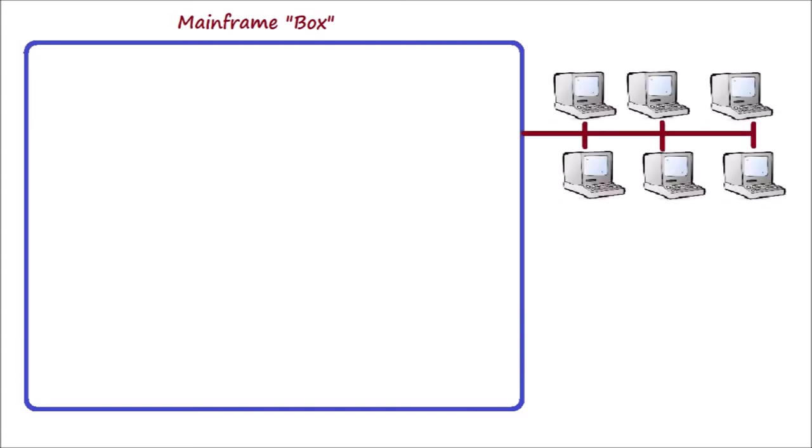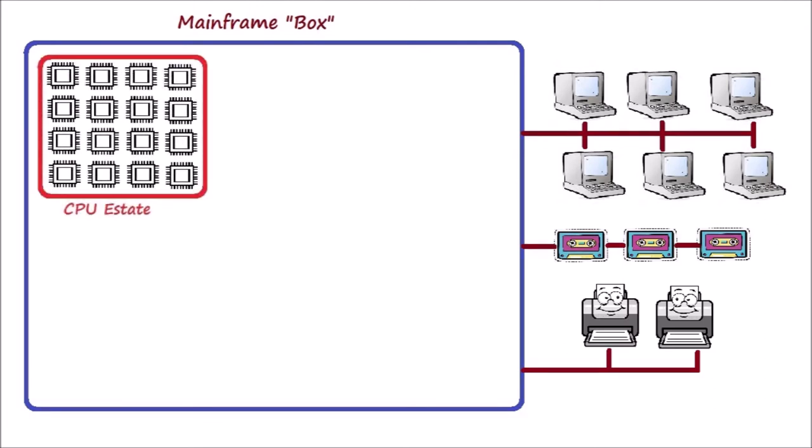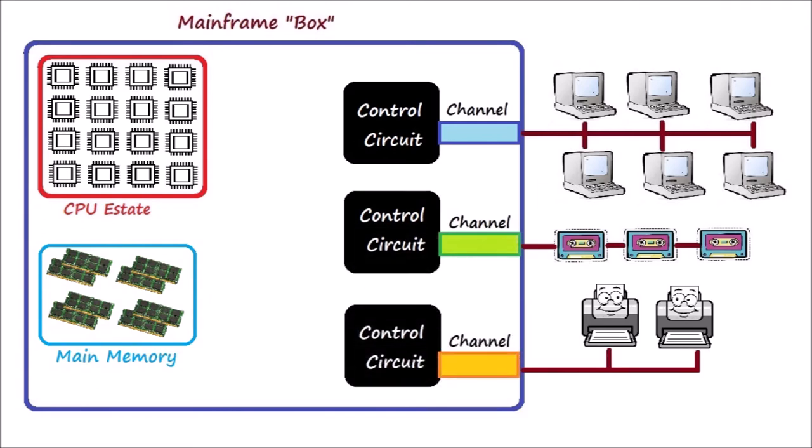If we are to draw a logical picture, here's a big box that represents the mainframe, and we have a pool of terminals connected to it, also a pool of tapes and pool of printers. Within the mainframe box we have a pool of CPUs, RAM or main memory, and now something unique: control circuits and channels. A channel is basically a connection between external input/output devices like printer or terminal and the control circuit. Again, a control circuit contains logic to work with a particular type of input/output device. A control circuit for a printer would have, for example, much different internal circuitry and logic than a control circuit for a tape drive. Latest mainframes can have up to 1000 such channels.